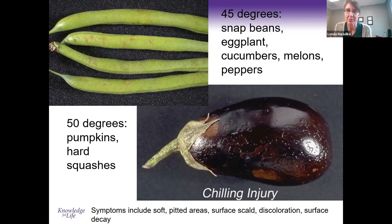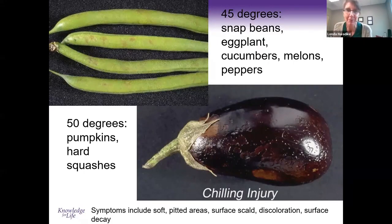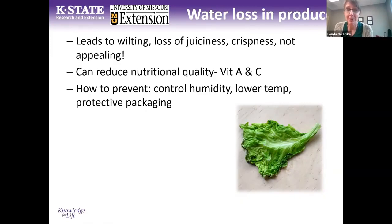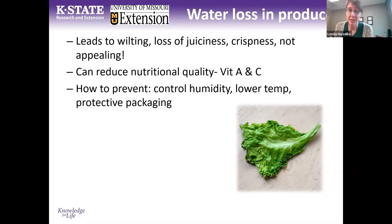Water loss is really important as well. I think we've all seen lettuce that looks wilted and it's really not appealing — I had some in my fridge recently that ended up in the compost because it just wasn't appealing. You can also lose water-soluble vitamins like vitamin A and vitamin C. To control water loss: control humidity, lower storage temperature, and use protective packaging. Some refrigerators do have humidity control drawers. Some produce is better stored in high humidity and some in low humidity.